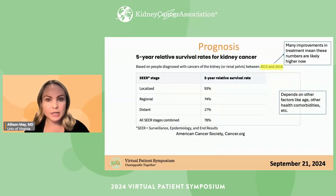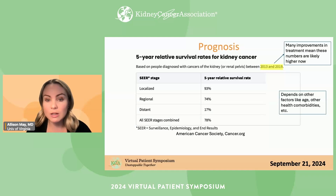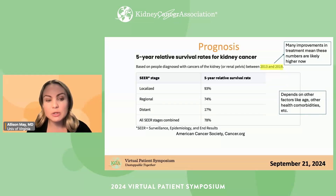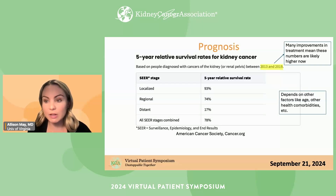Regarding prognosis: this slide shows the five-year survival rates for kidney cancer. Overall they're very good — for localized masses, almost everyone is still alive and doing well at five years, and even regional masses do well. Once the tumor has metastasized, it's more aggressive and outcomes are less favorable. But this data has to be five to ten years old in order to report five-year survival rates, and we have many improved treatments since then — so I think these numbers are actually even higher than shown here. Survival also depends on other medical issues, age, and other factors.